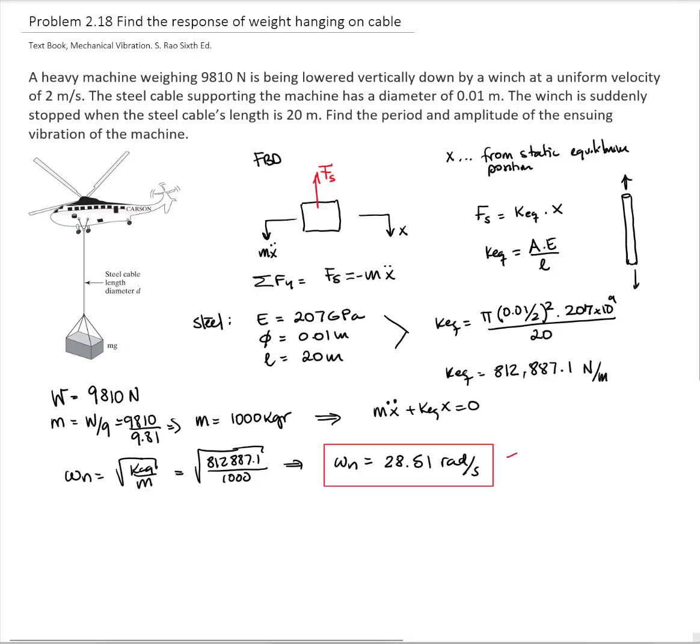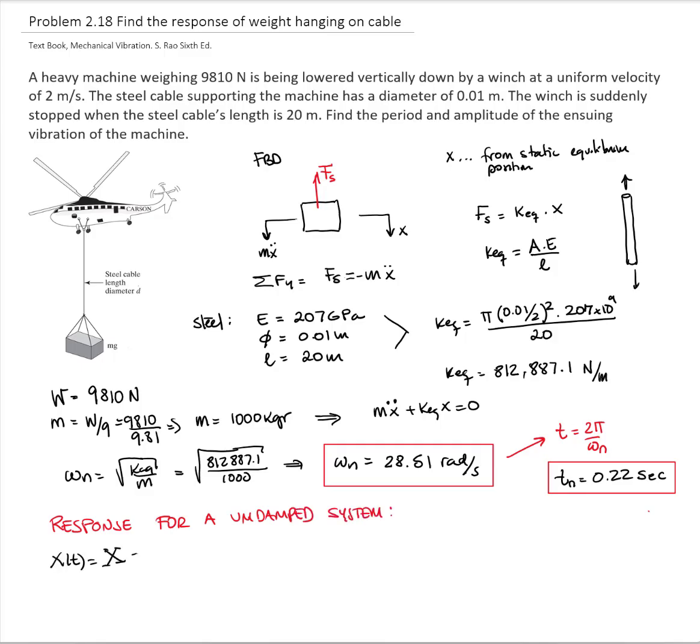This allows me to calculate the period, 2 pi over natural frequency. The period is equal to 0.22 seconds. Now, the response for an undamped system is equal to the amplitude times cosine of omega n t minus a phase angle.